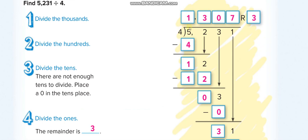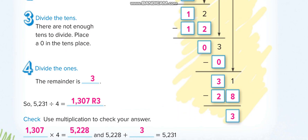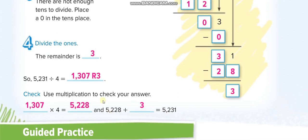So the quotient is 1307 remainder 3. And this is how you check your answer: multiply the quotient with the divisor, and then add the remainder. This is the answer, and then add the remainder.